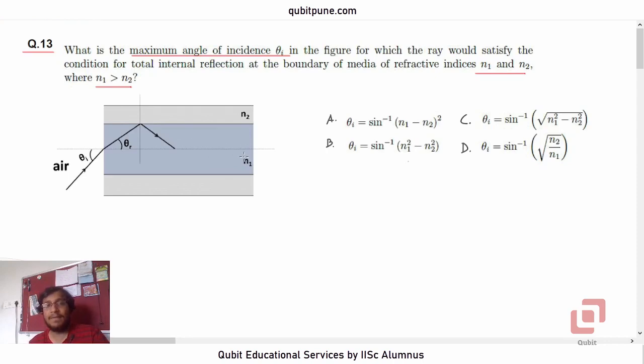That is obvious because total internal reflection is possible only when the ray is traveling from a denser medium to a rarer medium. Now there are actually three media here: the air, the medium with refractive index n1, and the medium with refractive index n2.